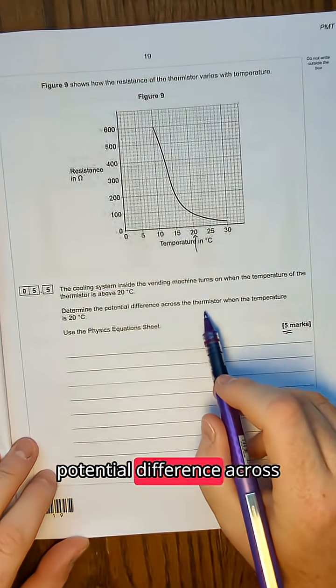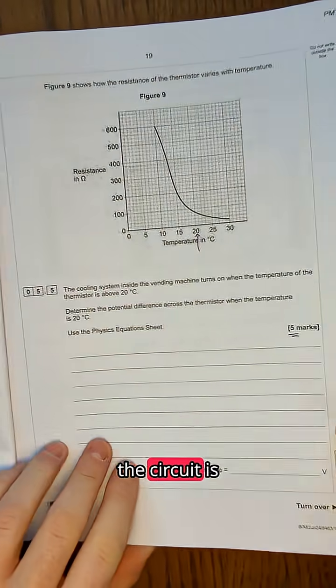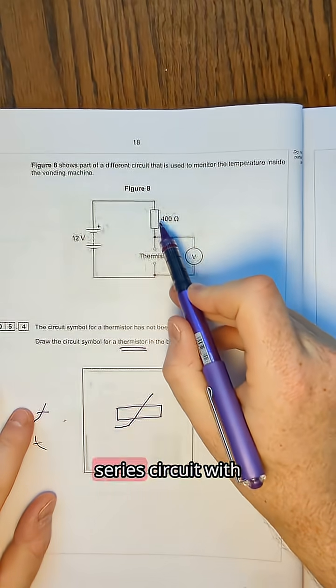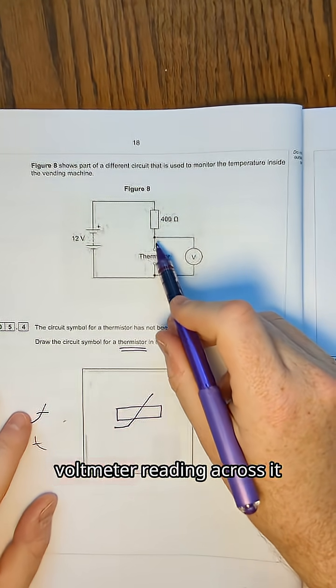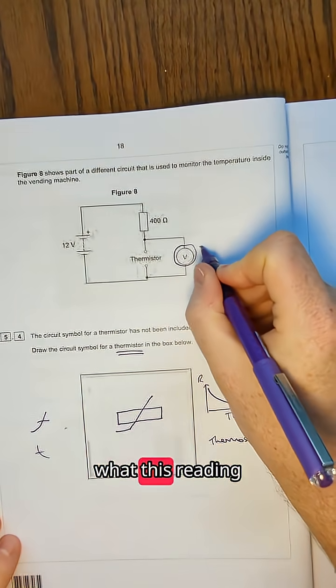To determine the potential difference across the thermistor when the temperature is 20. Now the other missing bit to the circuit is this part here. So the question is all about this circuit, which is a series circuit with a fixed resistor and a thermistor with a voltmeter reading across it. The question is asking us to work out what this reading is.